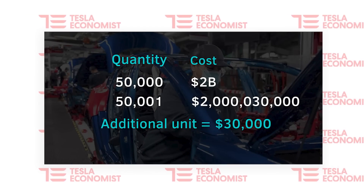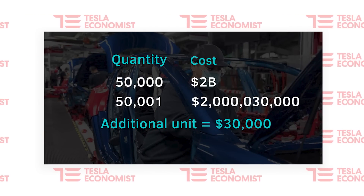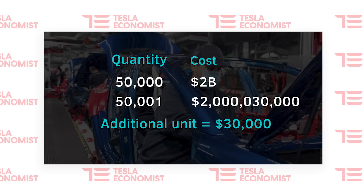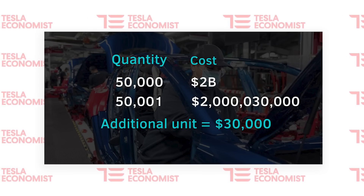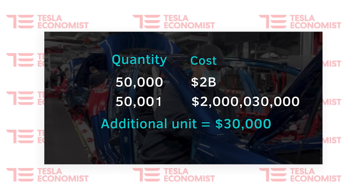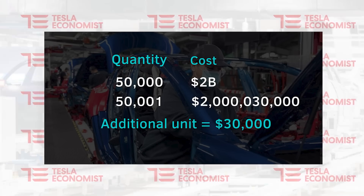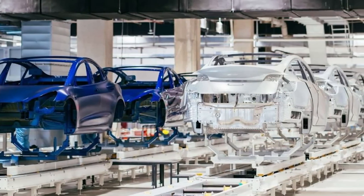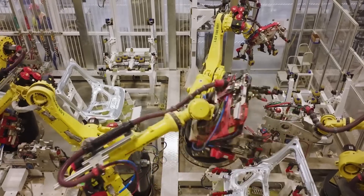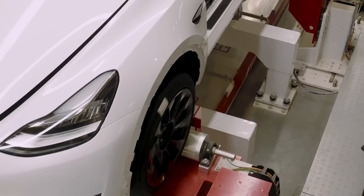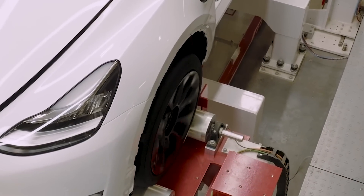Perhaps the cost to produce 50,000 Model Ys a month is $2 billion, but then if Tesla wanted to make 50,001 Model Ys, the total cost might then come to $2,030,000. The extra cost was $30,000 to produce one additional Model Y. Yet the first 50,000 units had a total cost of $2 billion, which is an average of $40,000 per vehicle. Tesla's average cost per vehicle is $40,000, but the marginal cost of an additional unit is just $30,000 — 25% less cost.